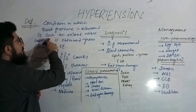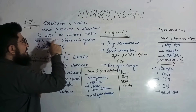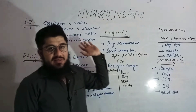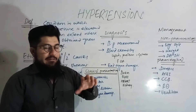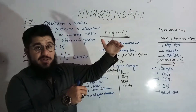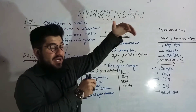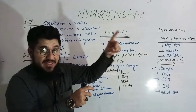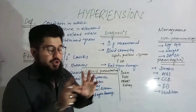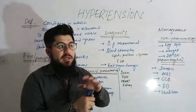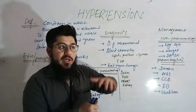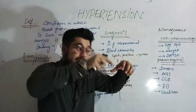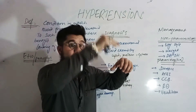The medical definition is: hypertension is a condition in which blood pressure is elevated to such an extent where benefit is obtained from lowering of it. If blood pressure is elevated to a certain extent and we lower that value, we will get benefit in that particular patient.